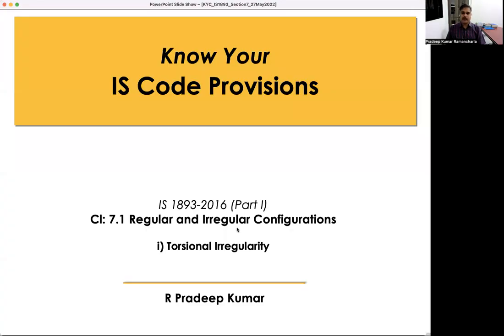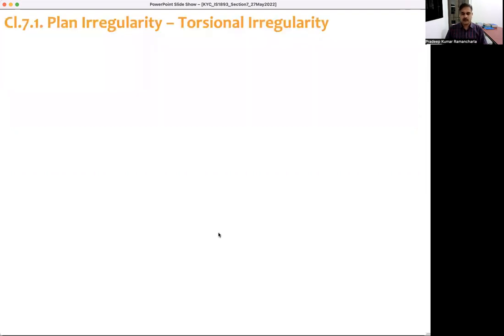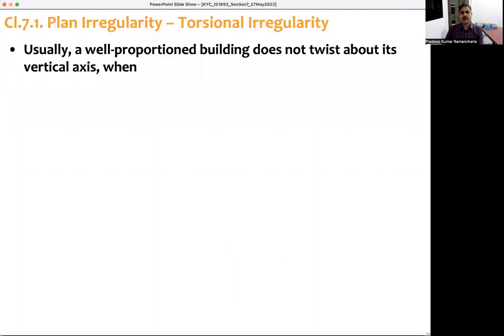Clause number 7.1 covers regular and irregular configurations. In Table 5, torsional irregularity is listed as the first item. Torsional irregularity: what the code says is that a well-proportioned building does not twist about its vertical axis when this is properly addressed.